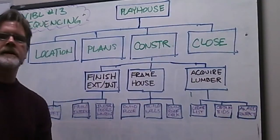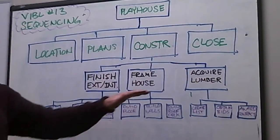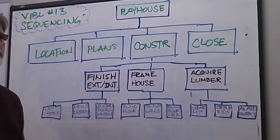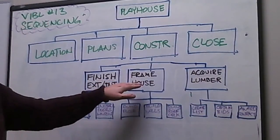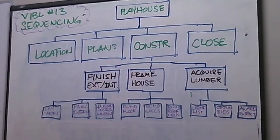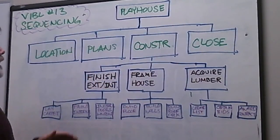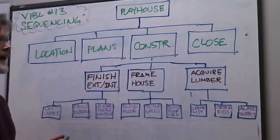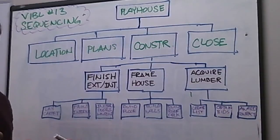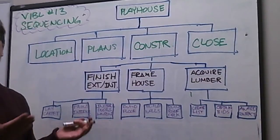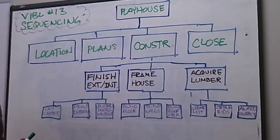In this particular case, the common logic is that you would need to acquire the lumber first before you could actually have the carpenters frame and build the house. And once they have framed and built the house, then you're able to go onto the exterior and interior of your playhouse and be able to finish it. That is to lay the carpet, to paint the walls and to install those doors and windows.